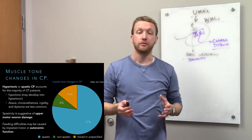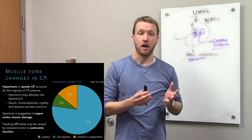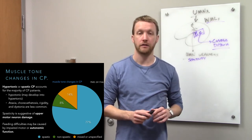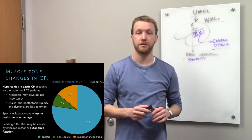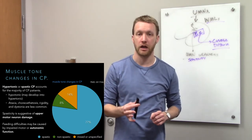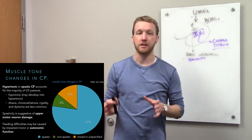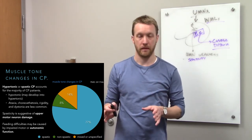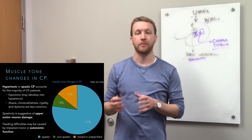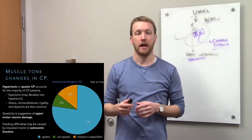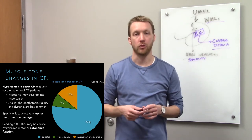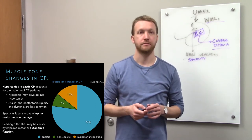Early on, you may see hypotonia — decreased muscle tone — similar to the spinal shock seen after spinal cord injuries. This is followed by later development of hypertonicity as upper motor neuron weakness becomes more apparent over time.